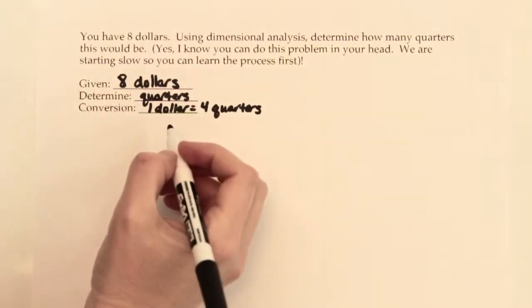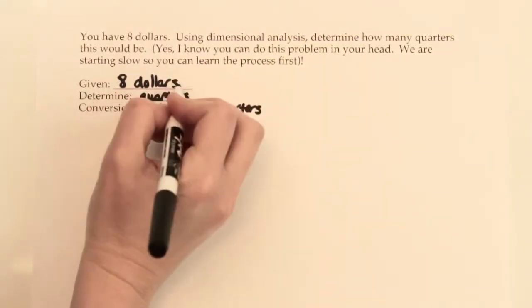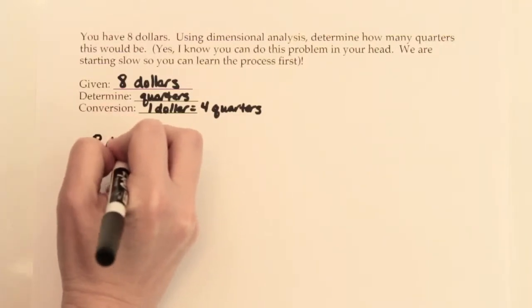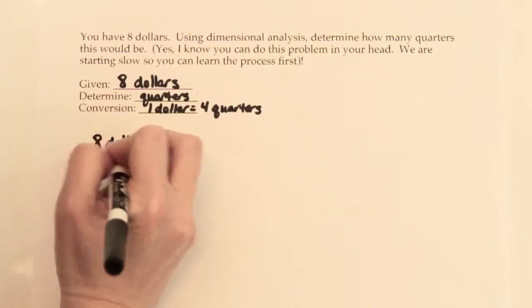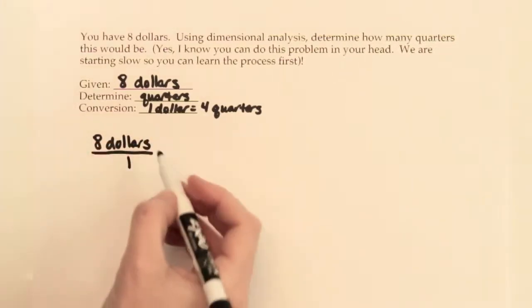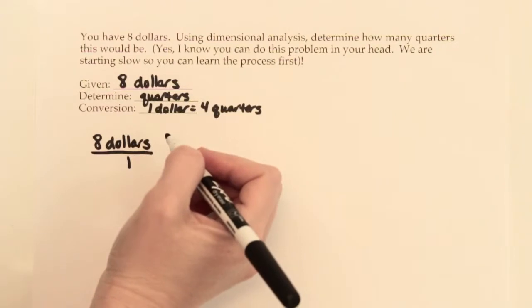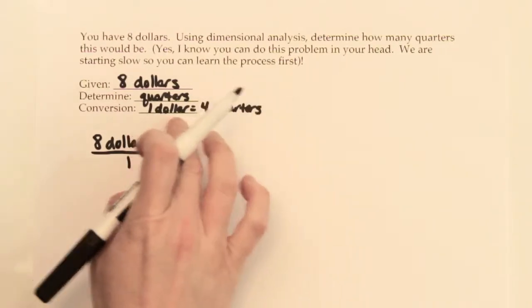All factor label problems, all of them, you're going to start every single one by taking whatever you're given, whatever you're told in the problem, goes over the number 1. Then we're going to try and get rid of those dollars and turn them into quarters, where we're trying to go. So we're going to take this conversion factor...